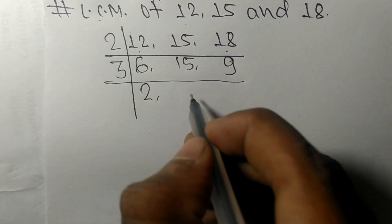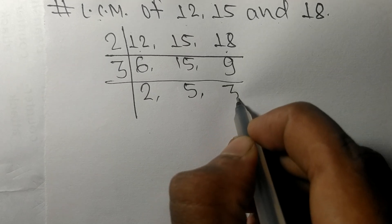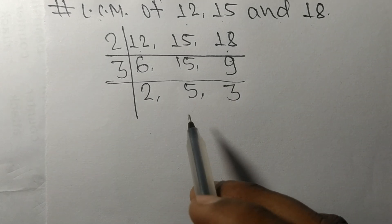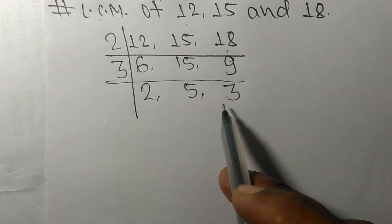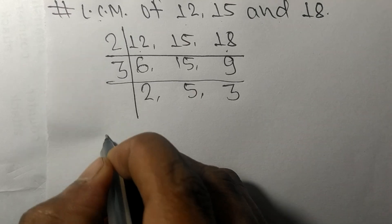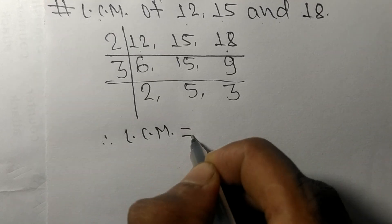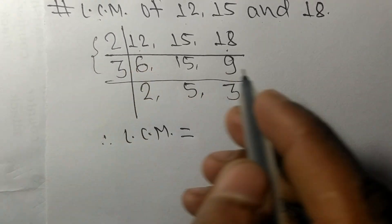and 3, which are not exactly divisible by the same number. Therefore, the LCM is equal to, from this side it is 2 and 3, from this side it is 2, 5, and 3.